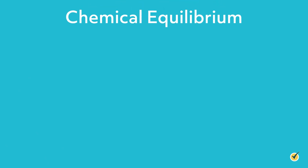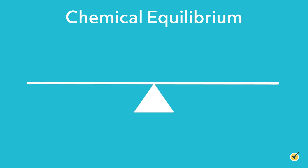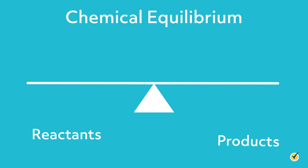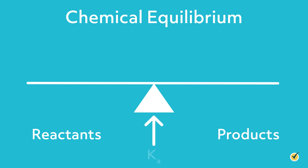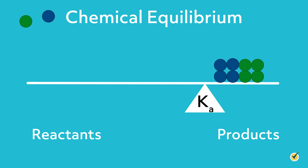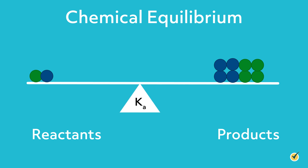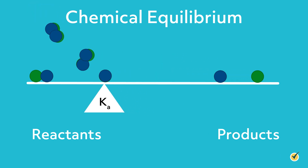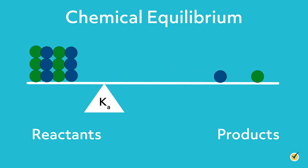A simple and useful analogy for chemical equilibrium that we'll use for this video is the seesaw. Imagine that the left side represents reactants and the right side represents products. The position of the fulcrum — the balance point — is determined by the equilibrium constant. As the equilibrium constant increases, the fulcrum shifts to the right and the system is balanced when there is more product than reactant. As the equilibrium constant decreases, the fulcrum shifts to the left and the system is balanced when there is more reactant than product.